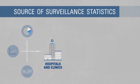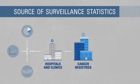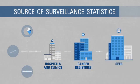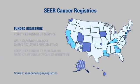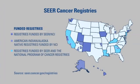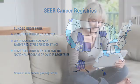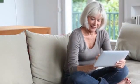You may be wondering where all of the data come from. Local hospitals and clinics report the data to cancer registries, which then gather the information and send it to SEER. SEER combines the data to calculate cancer statistics that represent the US population.